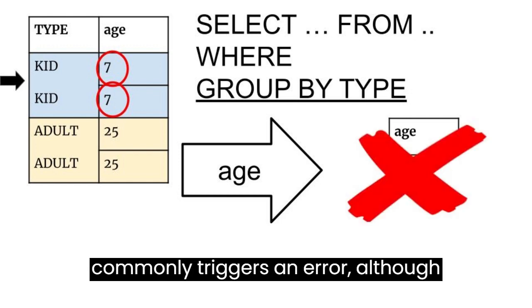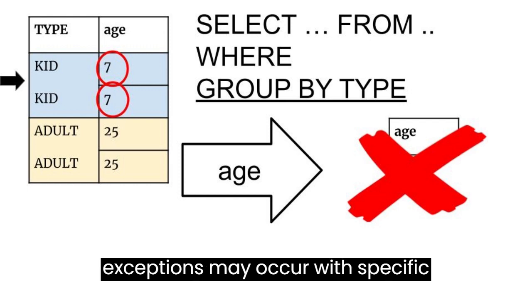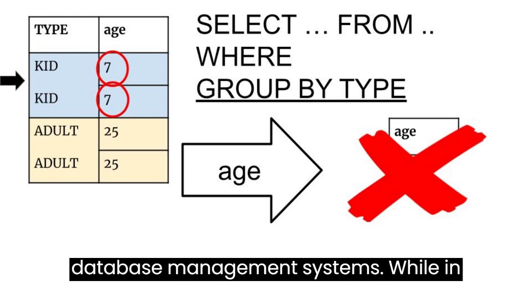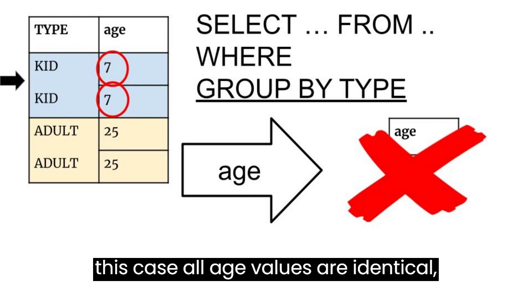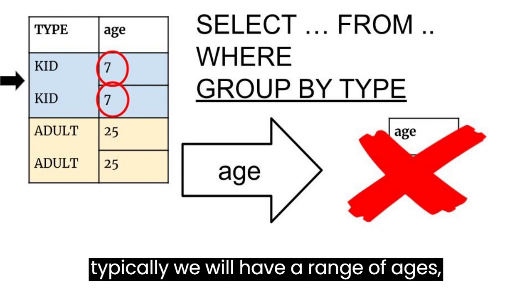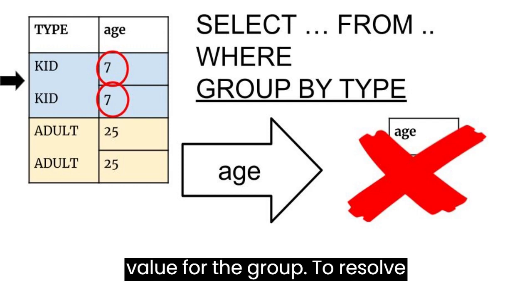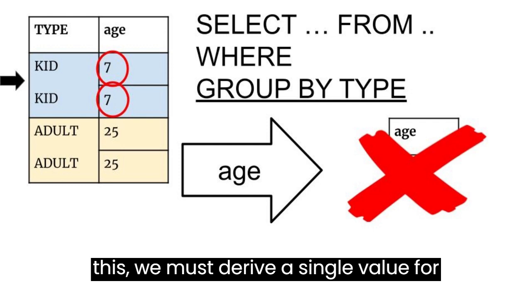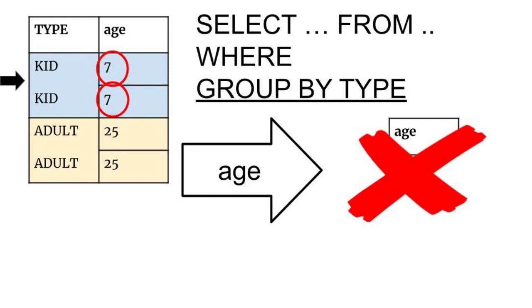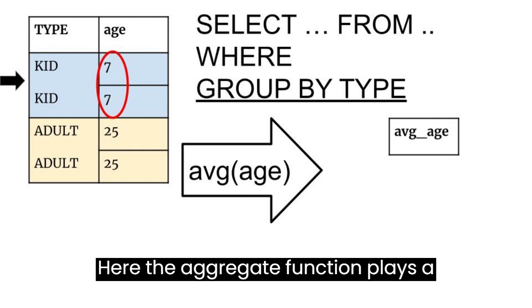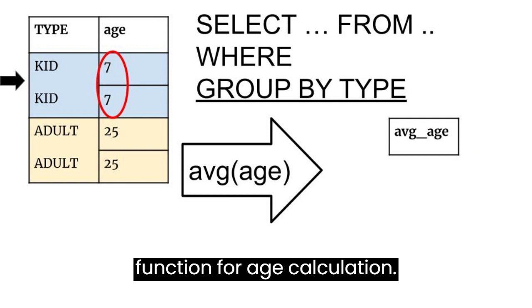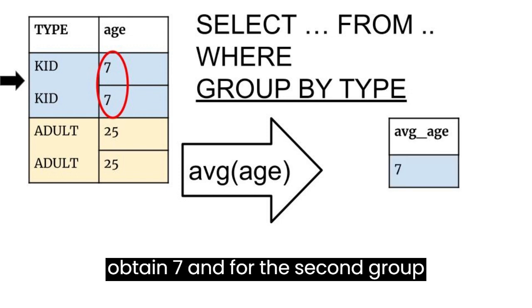This situation commonly triggers an error, although exceptions may occur with specific database management systems. While in this case, all age values are identical, typically, we will have a range of ages which complicates selecting a single value for the group. To resolve this, we must derive a single value for the entire group from a set of values. Here, the aggregate function plays a pivotal role. We opt for the average function for age calculation. Consequently, for the first group, we obtain 7, and for the second group, 25.